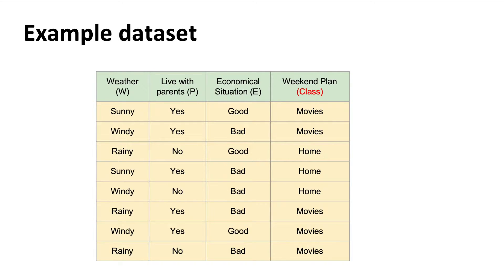Let's use this example dataset. Here we have three variables and one last column that contains the class. The first variable is weather, which can take values sunny, windy, or rainy — we'll use W to name it. The second column is 'live with parents' (yes or no), named P. The third column is 'economical situation', named E, which can be good or bad. Finally, the class is 'weekend plans', which can take two values: going to the movies or stay home.